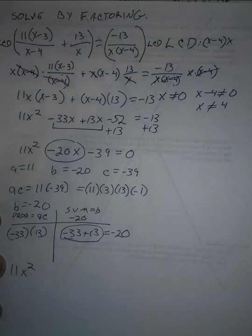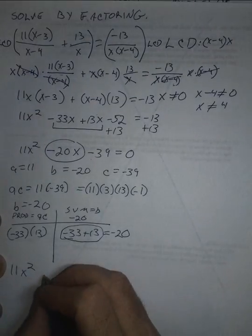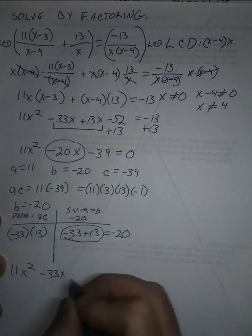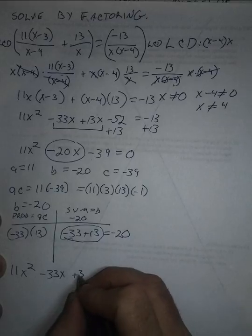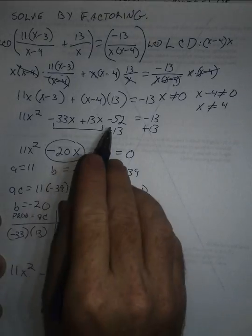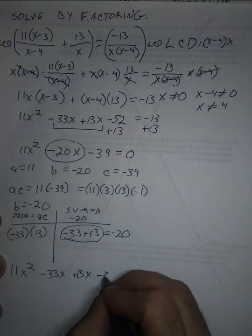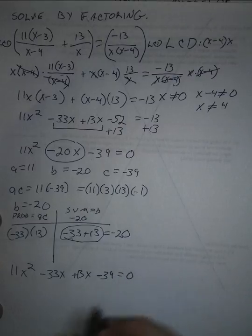So it's going to be 11x² minus 33x plus 13x. And then this last term is minus 39 equal to 0.